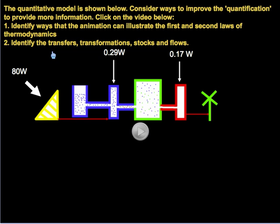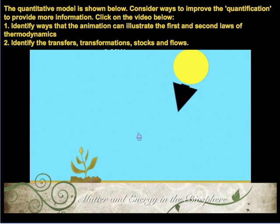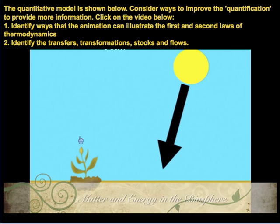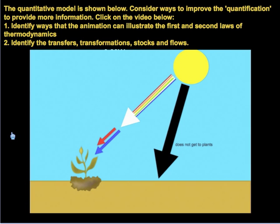Now that you have the model in front of you, identify all the transfers, transformations, stocks, and flows. Then test your understanding of the first law, the second law, and all of these transfers, transformations, stocks, and flows by looking at this animation and applying all of these terms to it. You'll be looking to see how the animation conforms to the first and second laws, and what transfers, transformations, stocks, and flows you observe.